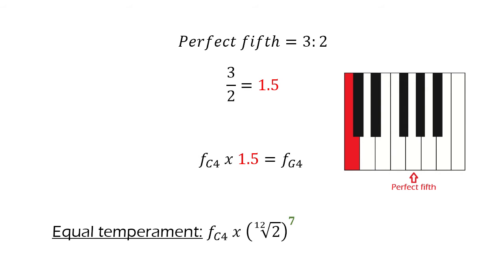The equal tempered ratio would be the 12th root of 2 to the 7th power, for being an increment of 7 semitones, which equals 1.4983.